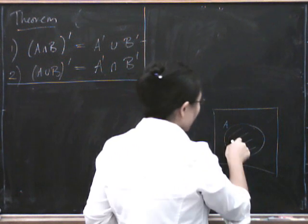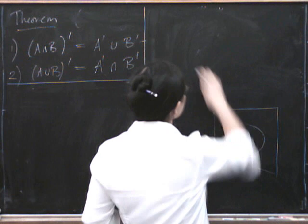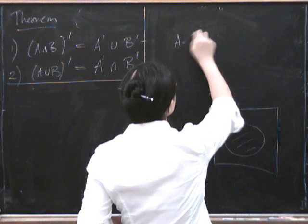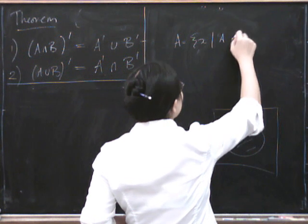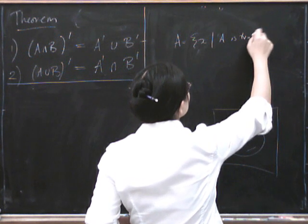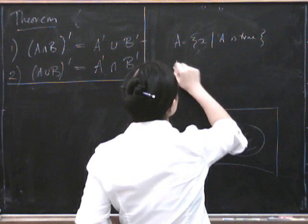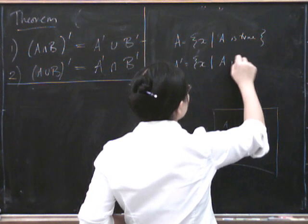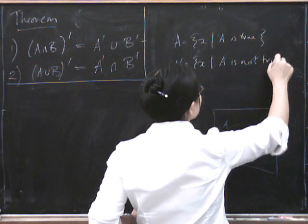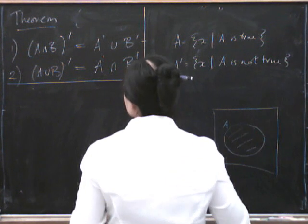So another way of saying that is inside here is all the elements X such that A is true, then the complement of A is all those elements such that A is not true. So it's just like negation.